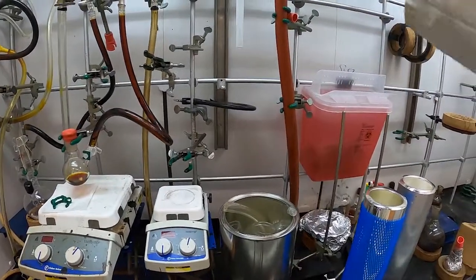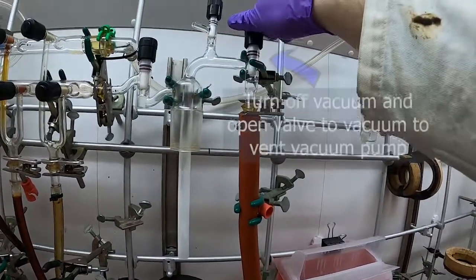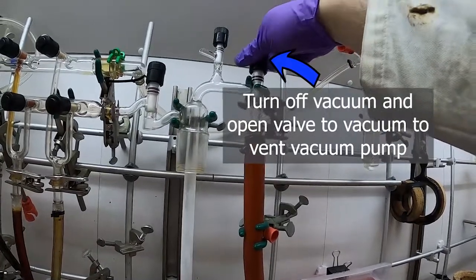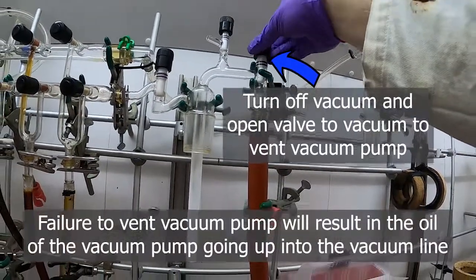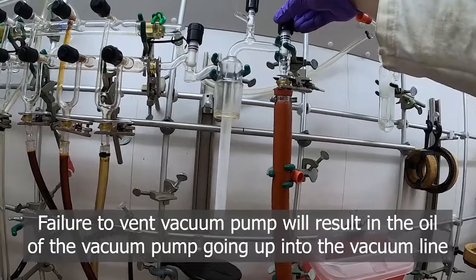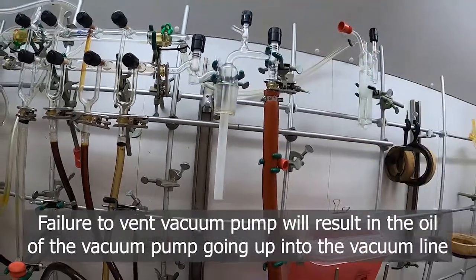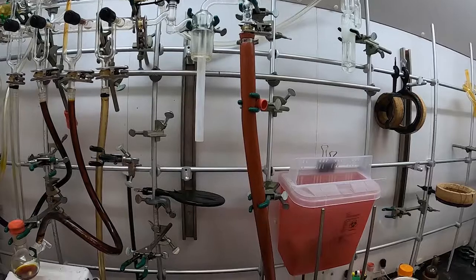Then the next thing we need to finish up is to vent the vacuum side, and it's important to do this so that we don't have oil getting pulled up out of the pump and into the line the next time we use it, and that can cause problems.